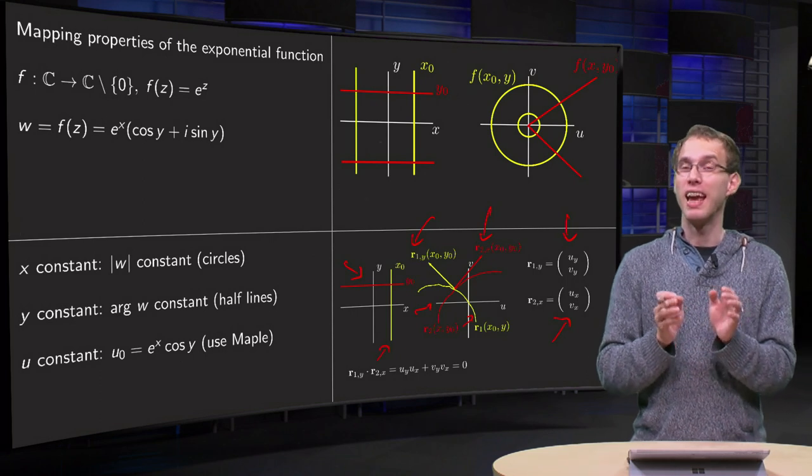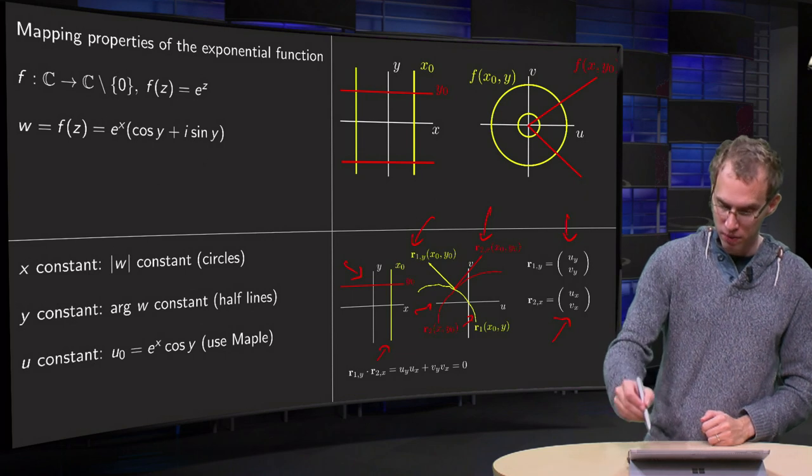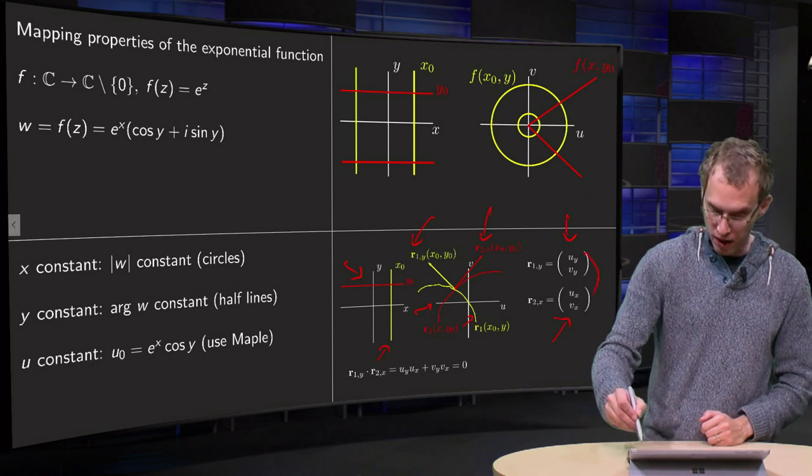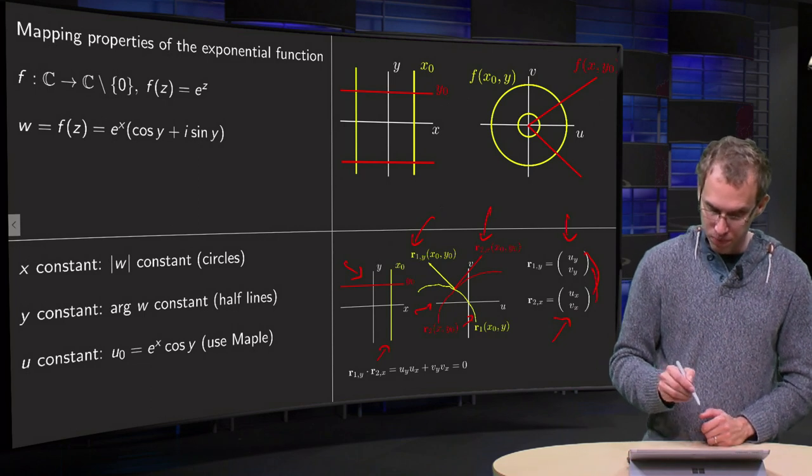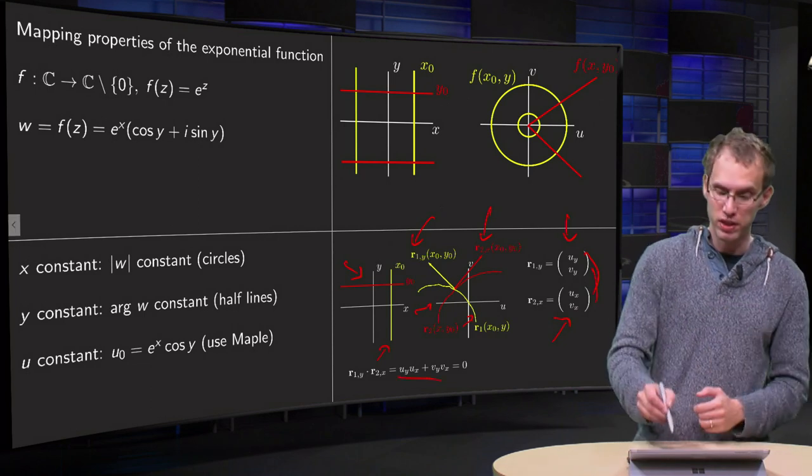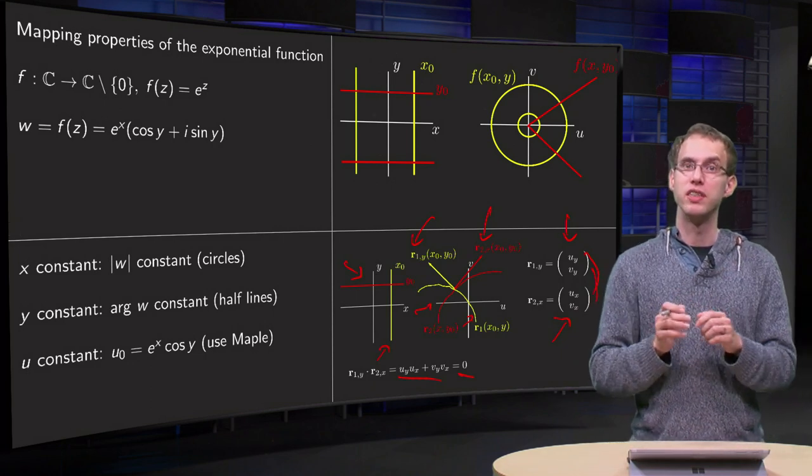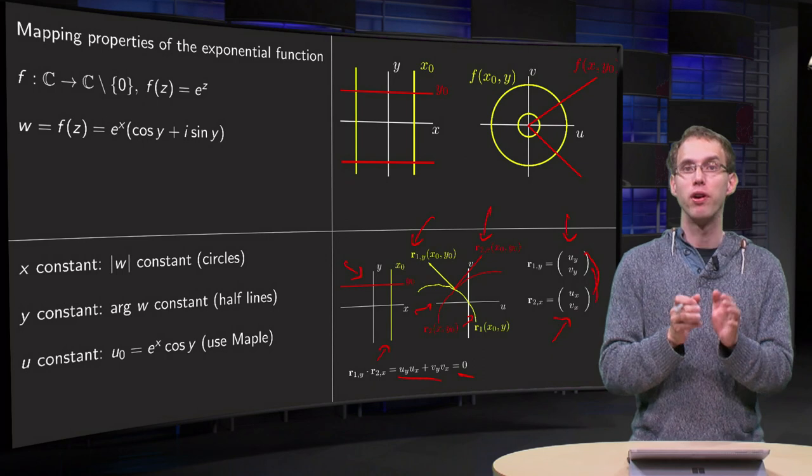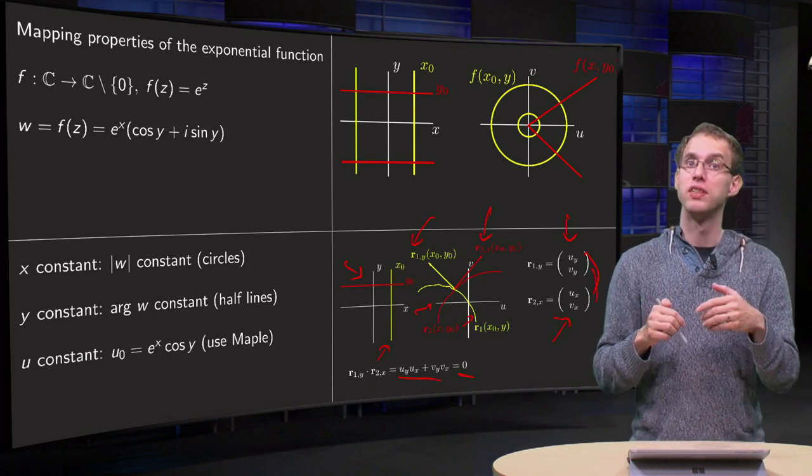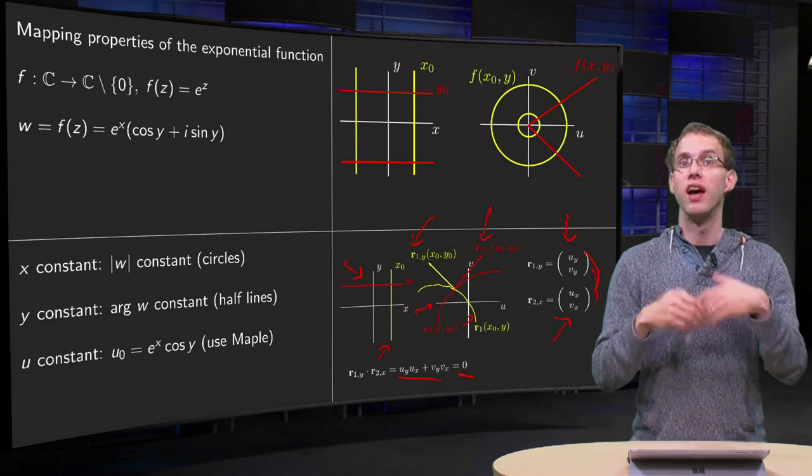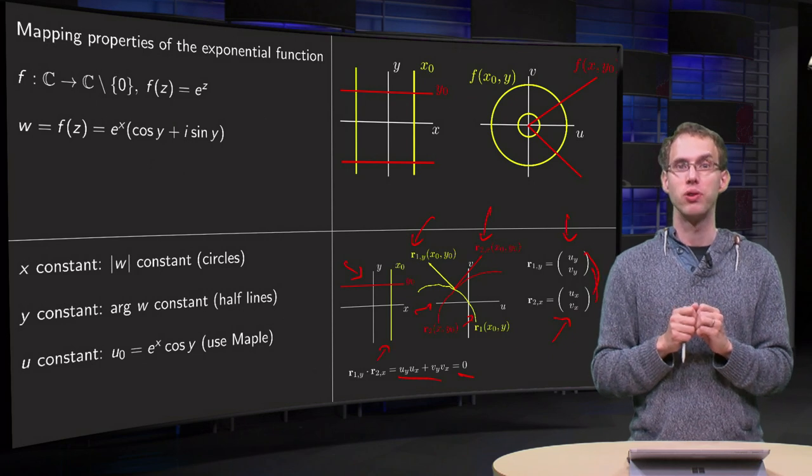So what happens if you take the inner product of those two vectors? We get uy·ux + vx·vy, and due to the Cauchy-Riemann equations, this is 0. So if you satisfy those Cauchy-Riemann equations, the inner product between your tangents is always 0 in the point of intersection, which means that the tangents intersect orthogonally, which means that the curves intersect orthogonally.